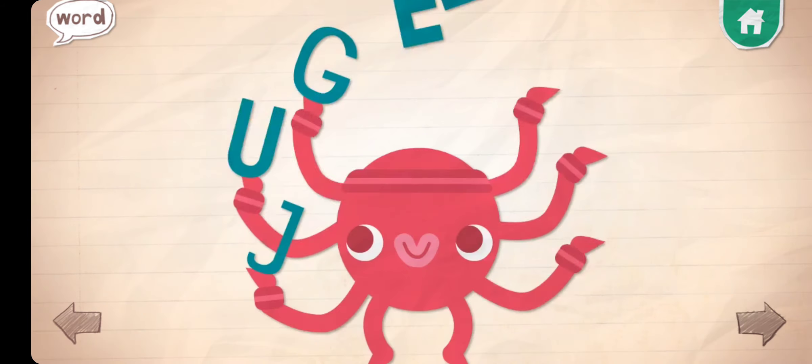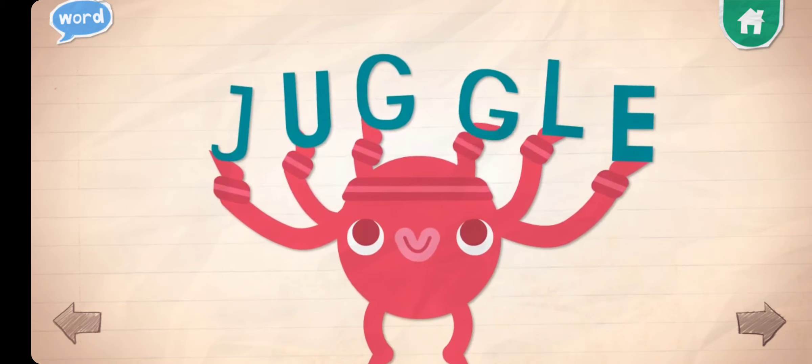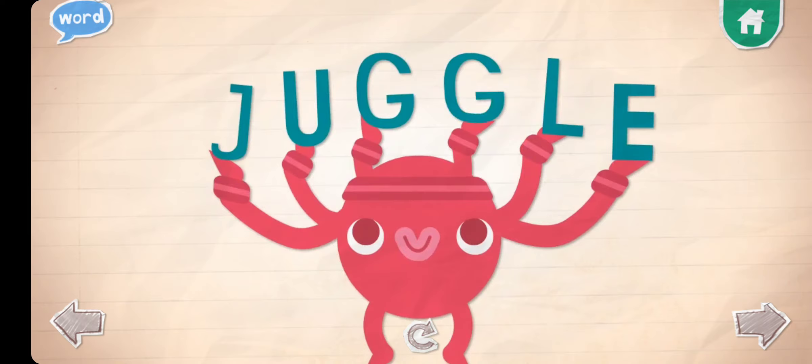Juggle! To juggle is to toss and catch many objects at the same time. If you can't catch them all, it doesn't count.